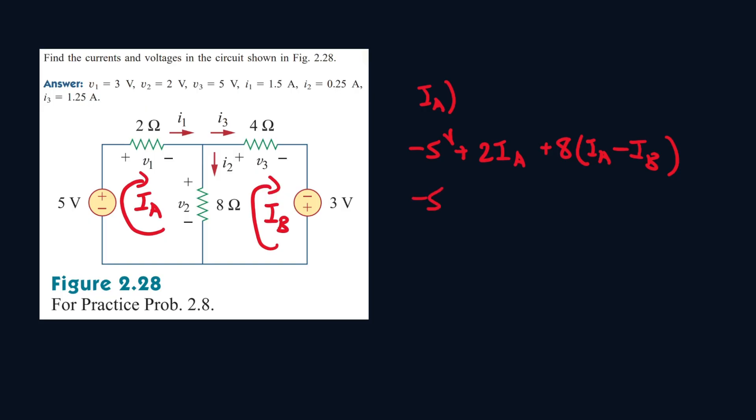Now let's simplify it, so it will be minus 5 plus 2 IA plus 8 IA minus 8 IB. Okay, and simplifying it more, collecting like terms. All right, so this is the first equation we have to work with.